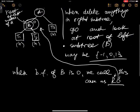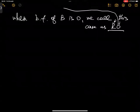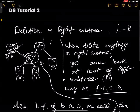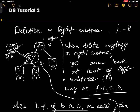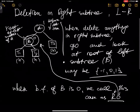In the R0 case, what you do is rotate A to the right. Let me show why. This is before deletion. When you delete something from the right subtree T3, the height of T3 becomes one less.